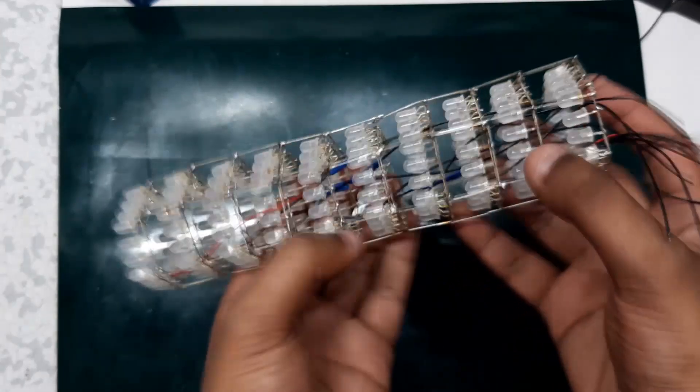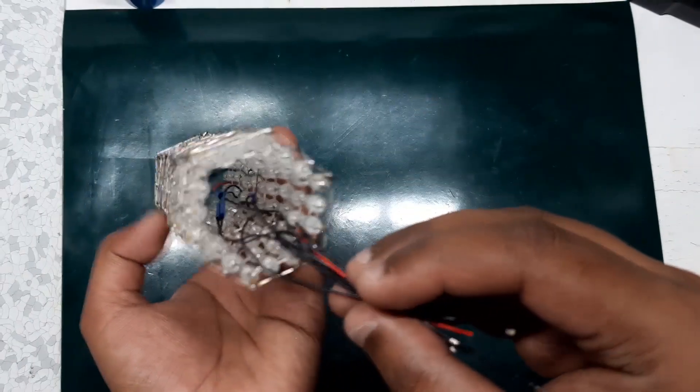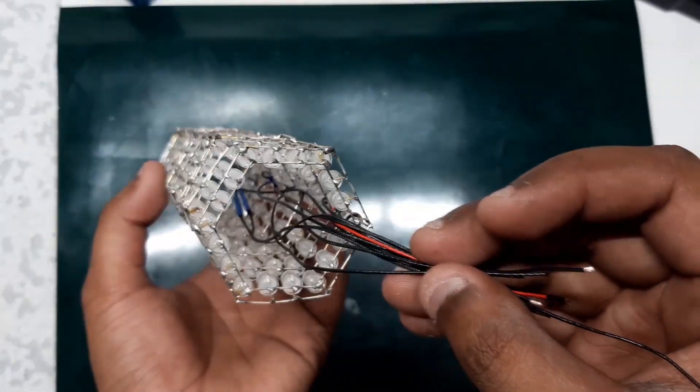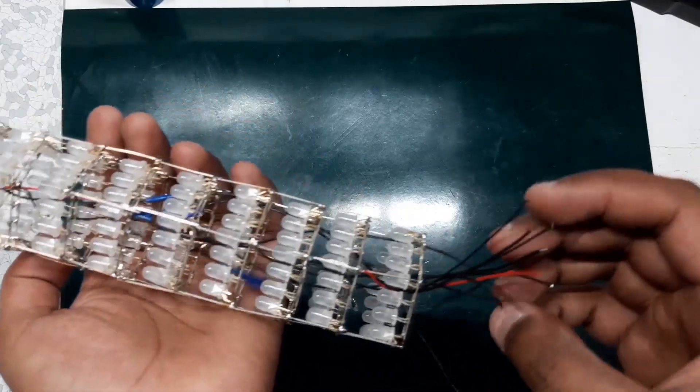After joining all the hexagon LED levels together, just solder the positive wire to the outside wire connection and solder 10 negative wires to each of the LED levels' ground port.